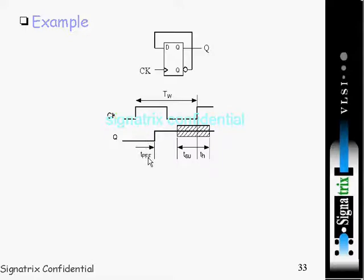Here we have considered positive edge triggered D flip-flop. So next, here what they are trying to show is the gap between this propagation delay to setup time of next clock cycle.